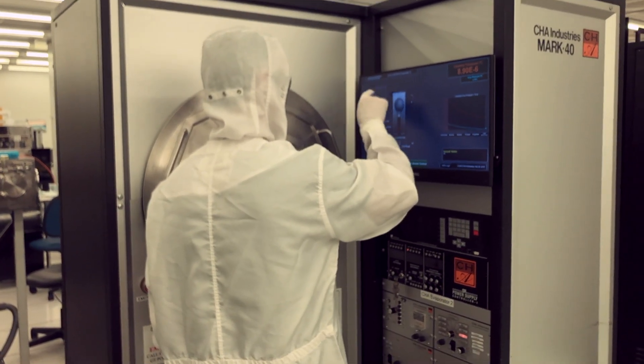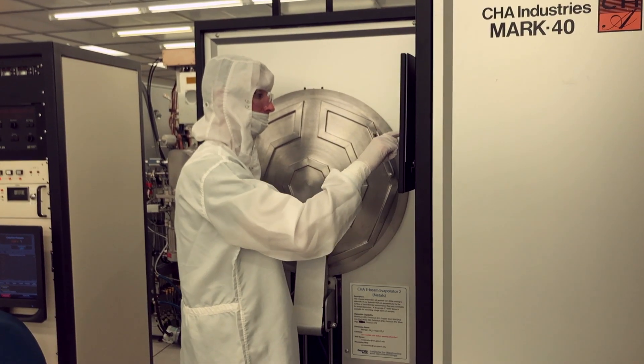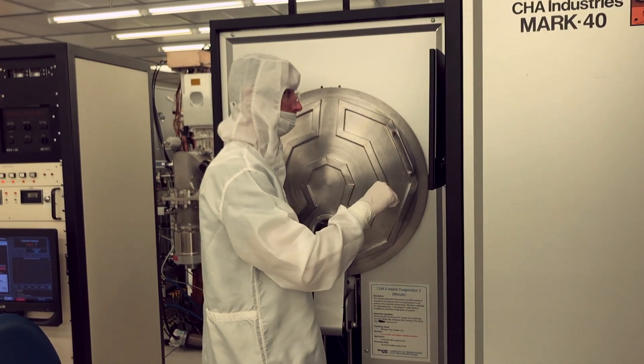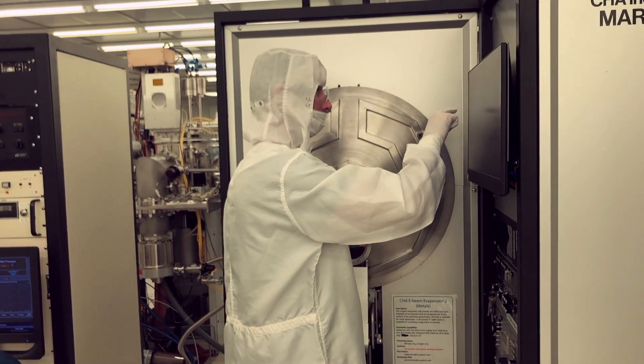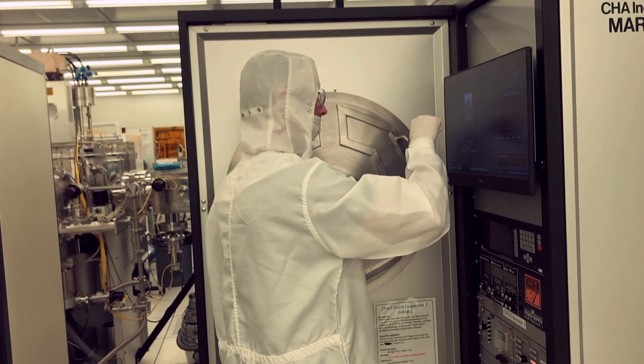Finally, the touchscreen monitor is located above all of the other controls and has various functions. The chamber and cryopump pressure can be viewed at the top right corner of the screen. Venting and pumping down the chamber are controlled on the screen, as well as enabling the process and controlling the shutter.